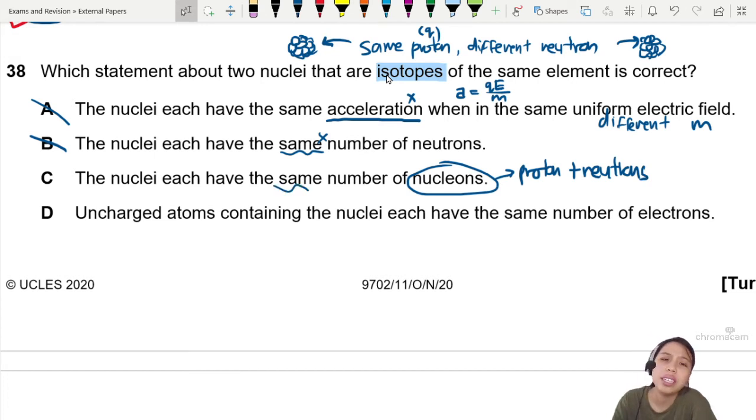Same, cannot be. Because you have a different number of neutrons. So, you cannot, you just cannot have the same. Same nuclear number as well. By the way, nuclear number, if it is the element X, this is Z, which is proton number. And they usually put A, which is nuclear number.